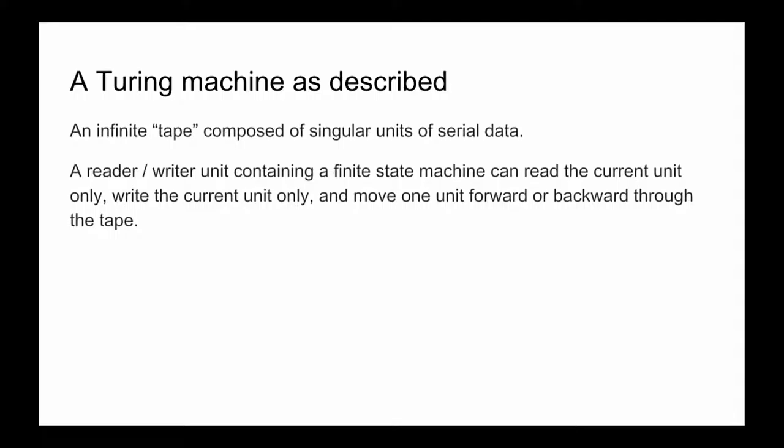So those rules as he described them was—he used the word tape. An infinite tape composed of singular units of serial data, just a big long row of units. Each unit contained a zero or a one as he described it. I don't know that it necessarily has to be that way, but in its simplest form it would be. It would be one of only two states. And that's the way our current computers think about things because it's the simplest way to build a machine.